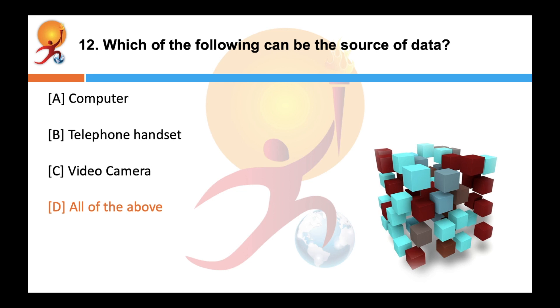Why? Because typically the source of data is generally a computer, but it can be any other electronic equipment such as telephone handset, video camera, etc., which can generate data for transmission to some destination.